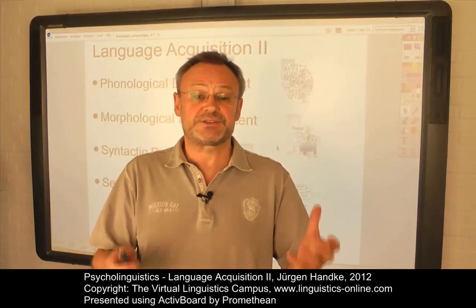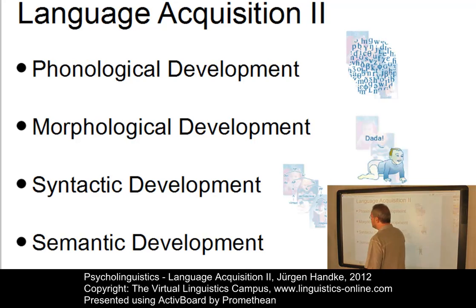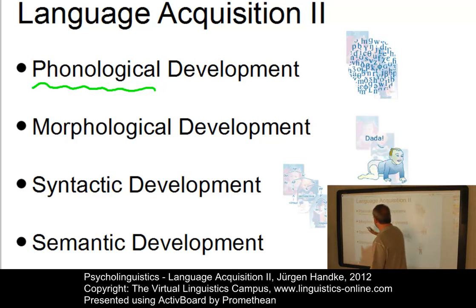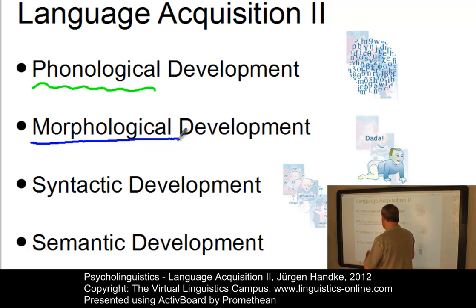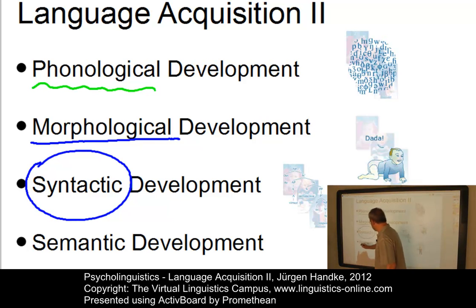In this new e-lecture we will describe how the child masters the essential ingredients of his language. In particular, we will discuss how the child develops the sound system of the language he or she is exposed to. And then we will look at the acquisition of words, that is morphological development. We will outline some central principles of syntactic development, and finally we will discuss some stages of the development of the mental lexicon.